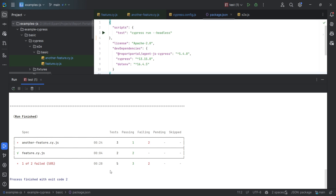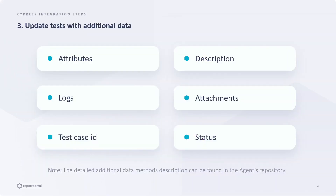Now that we've generated the basic report in Report Portal, let's explore what additional data entails and how to input it. Here we encounter various types of additional data. Description and attributes can be utilized to provide more details about the test and are also helpful for filtering and creating some widgets, such as Component Health Check. Additional logs and any attachments can be added to the report. The test case ID is used as a history ID across different launches. There is also an option to modify the status in Report Portal for a specific test result.